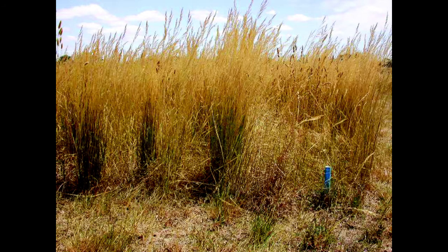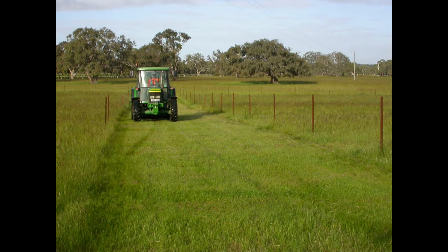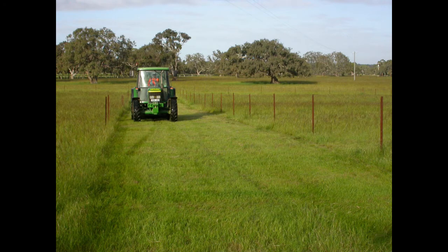Chilean needle grass forms erect, robust tussocks that can be up to one meter tall and variable in nature depending on grazing pressure. Under heavy grazing or slashing, plants can take on a prostrate growth form.